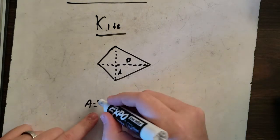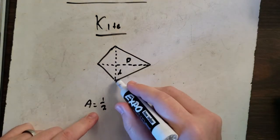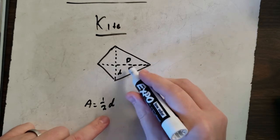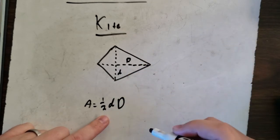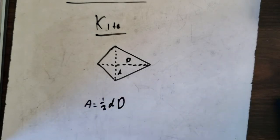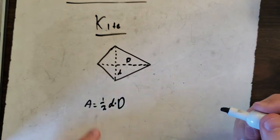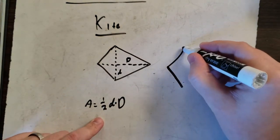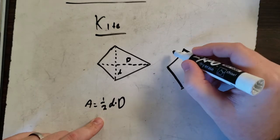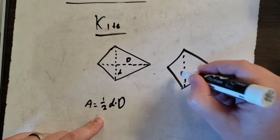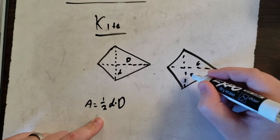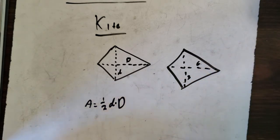Now, your formula is 1 half times the lowercase d times the uppercase D. So very simple. Let's say you got a kite and you have a 6 here and a 3 here.